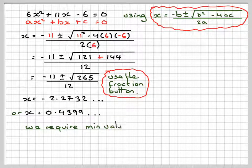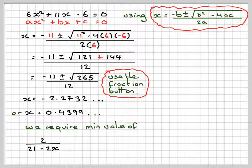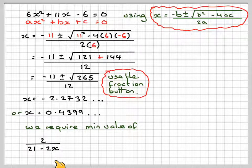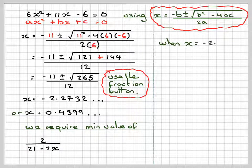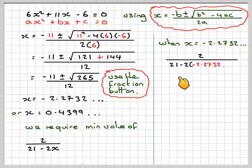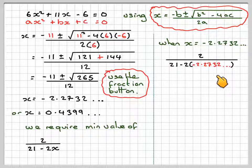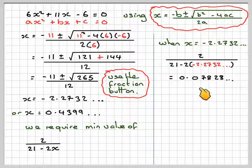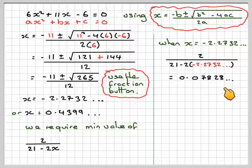So we required the minimum value of 2 divided by 21 minus 2x. So when x is equal to minus 2.2732, we're going to get 2 divided by 21 minus 2 times minus 2.2732, which gives me 0.07828.